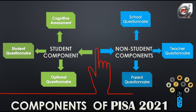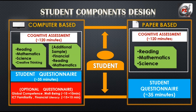Now we have two major components of PISA 2021: student components and non-student components, which are further subdivided into different types of questionnaires. Green components are of students and the blues are of non-students. Student components comprise of cognitive assessment, student questionnaire and optional questionnaire. Whereas non-student components comprise of school questionnaire, teacher questionnaire and parent questionnaire. Both the components, whether student or non-student, will be conducted in two methods: computer-based or paper-based.